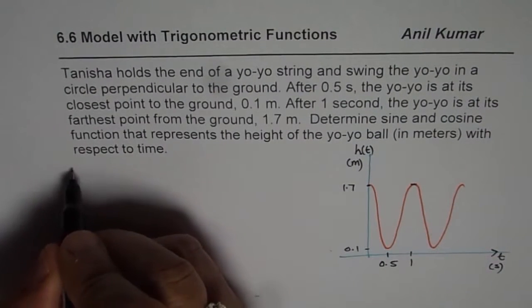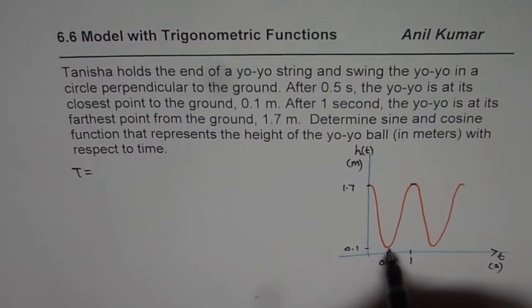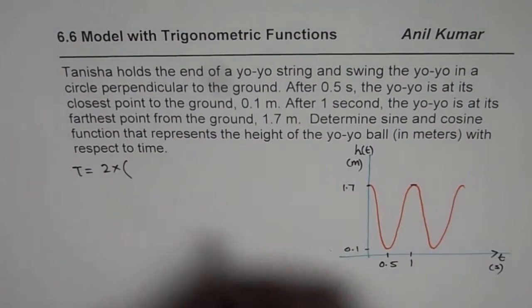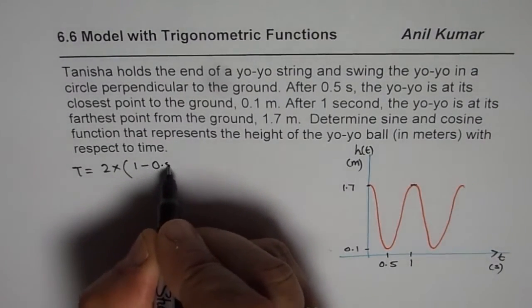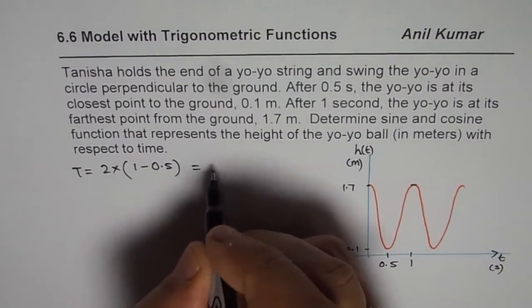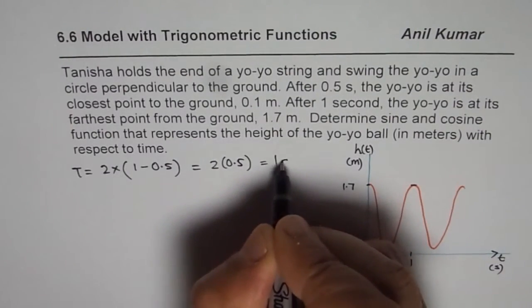Now time period for us is twice the distance between maximum, twice time period is two times difference between maximum and minimum, which is one minus 0.5 and that gives us two times 0.5 or one second.